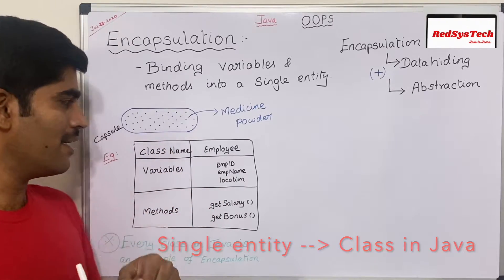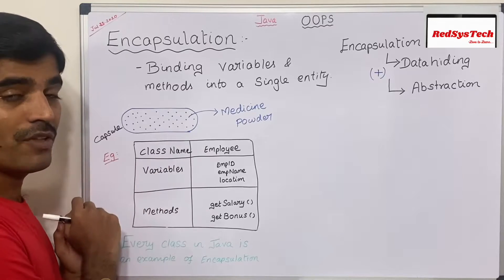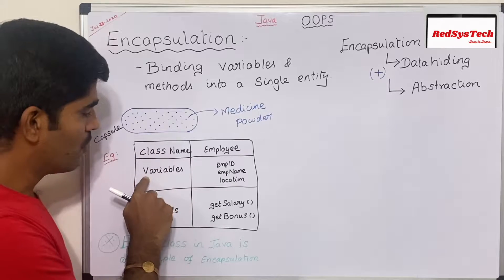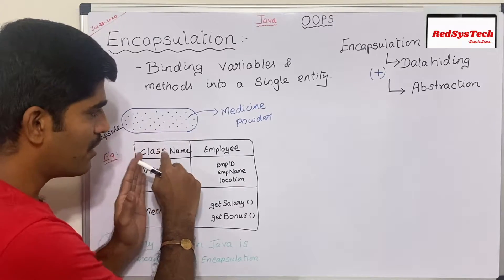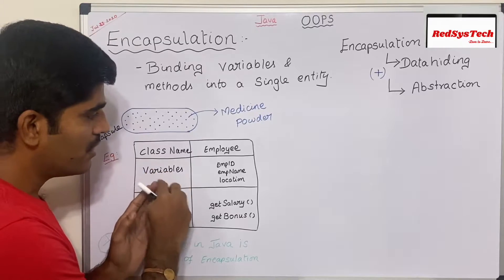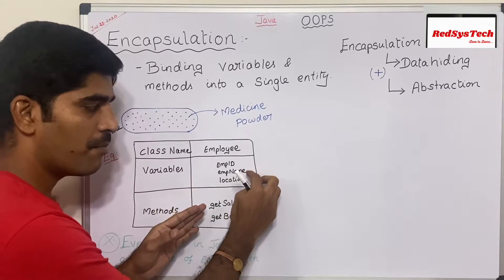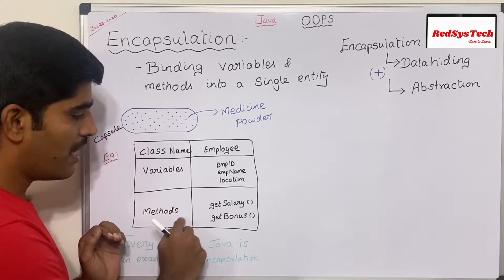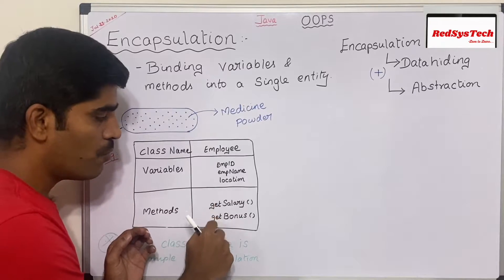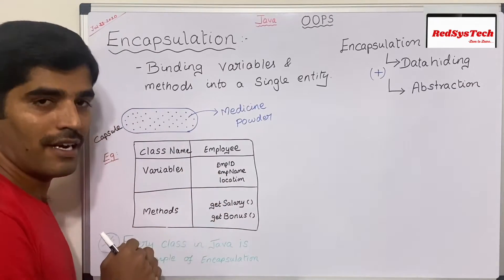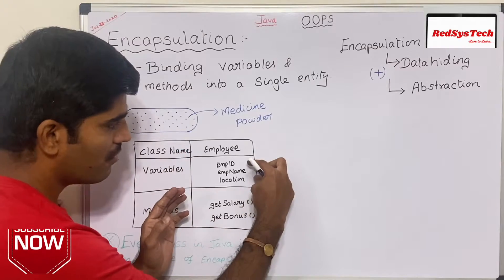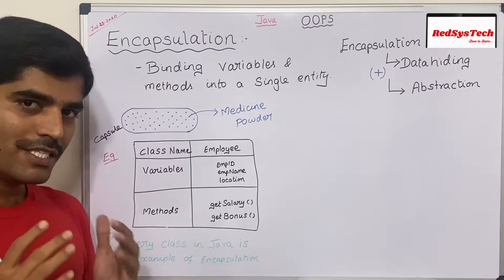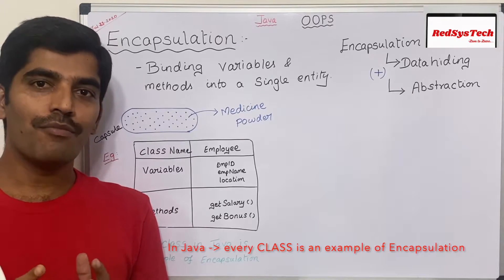Let's get deeper into this. A class should have a name and should contain variables and methods. For example, a class named Employee has variables like employee ID, employee name, and location. Similarly, it has methods like getSalary and getBonus. These methods are related to this particular class, and that is why we are encapsulating the variables and methods into a single entity. In Java, every class is an example of encapsulation.